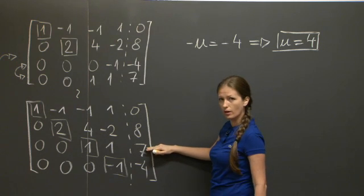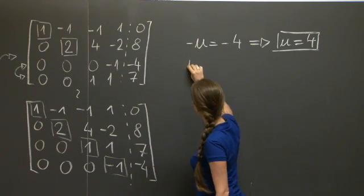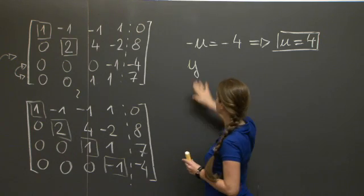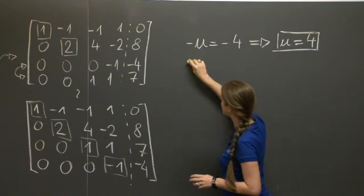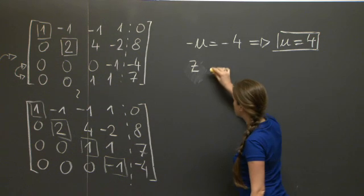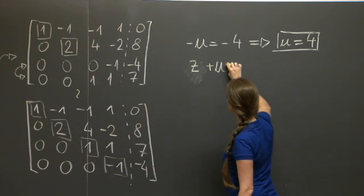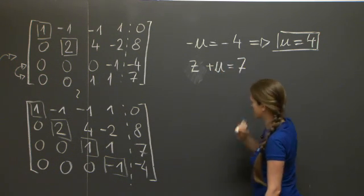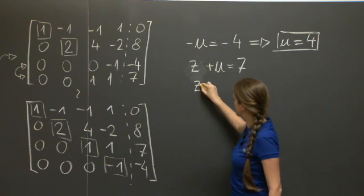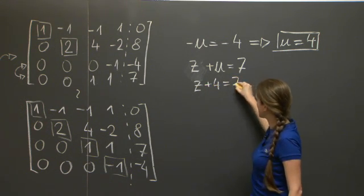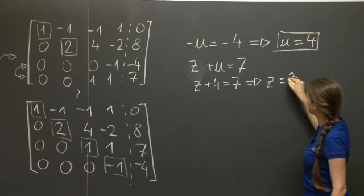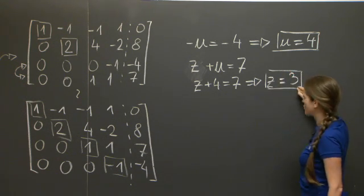Now, let's go back to the third equation. The third equation reads z—the third column corresponds to z plus u equals 7. But we know what u is now. So it reads z + 4 = 7, which just becomes z = 3.